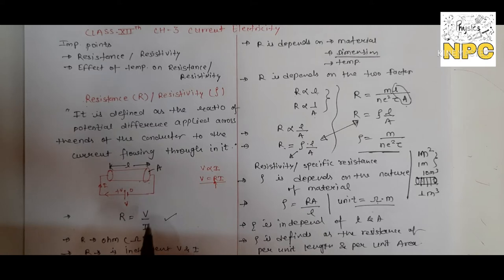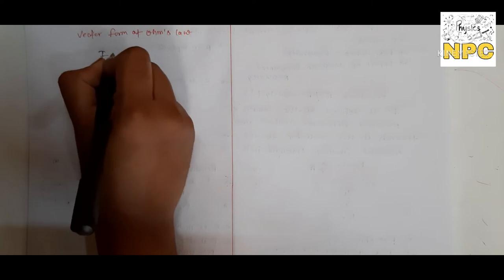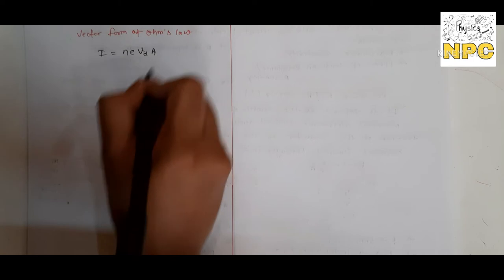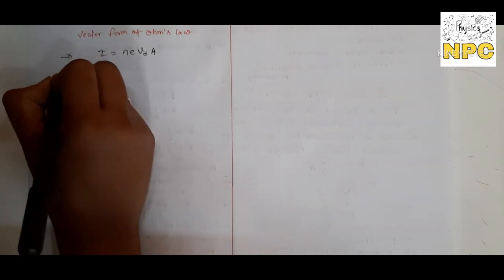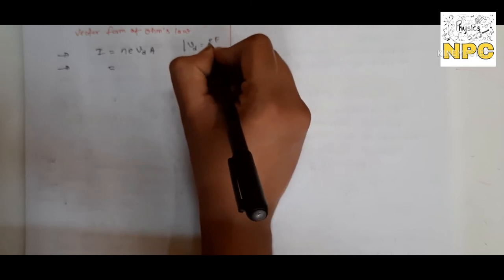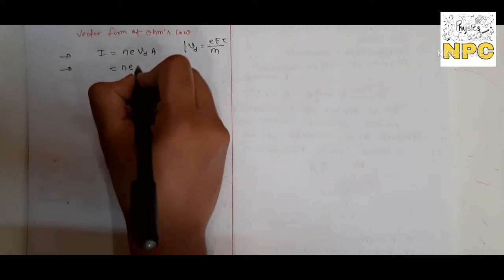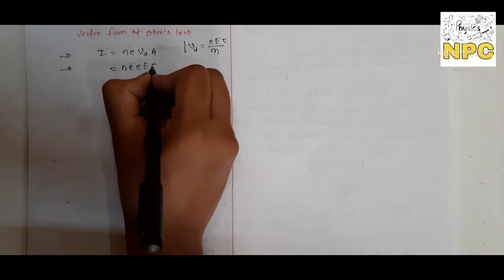Now we see the vector form of Ohm's law. We have the formula relating current and drift velocity: i equals nevd times A. Now if we substitute the value of vd — drift velocity — which was derived as eτ by m times the electric field E.